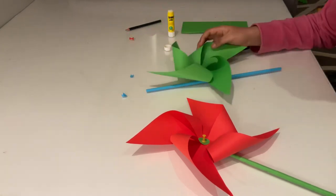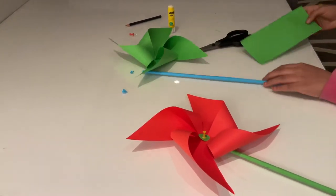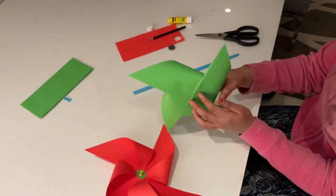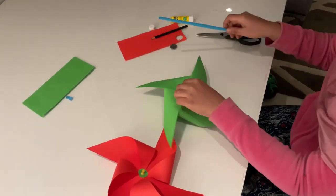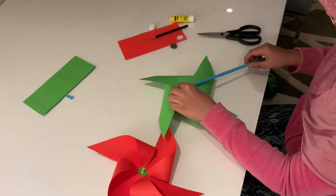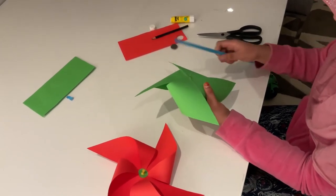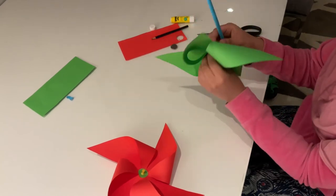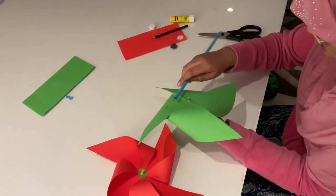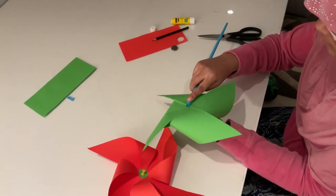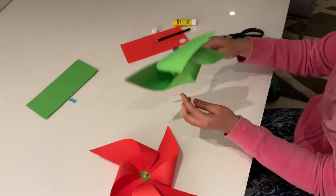After doing this cut it down on both sides. Now your firky, pinwheel or windmill stick is ready. Now just take a coin or a circle which you have.